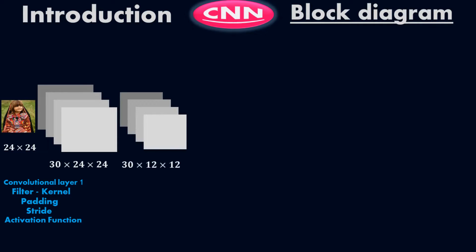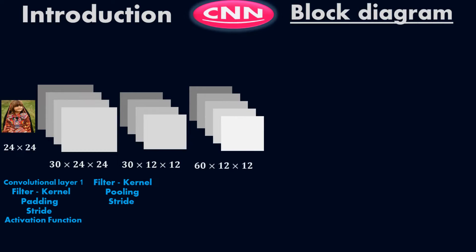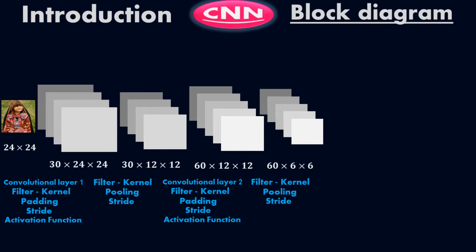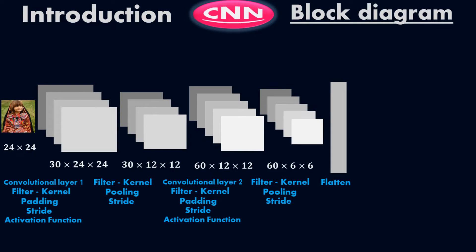Then we use 30 filters with a size of 12 by 12 — these are the filter kernels — with pooling and stride. Then comes the second convolutional layer, convolutional layer 2, with 60 filters of size 12 by 12. Here we use filter and kernel with padding, stride, and activation function. Then again the filter kernels, 60 filters with 6 by 6 size, doing pooling and stride. At the end we flatten everything.